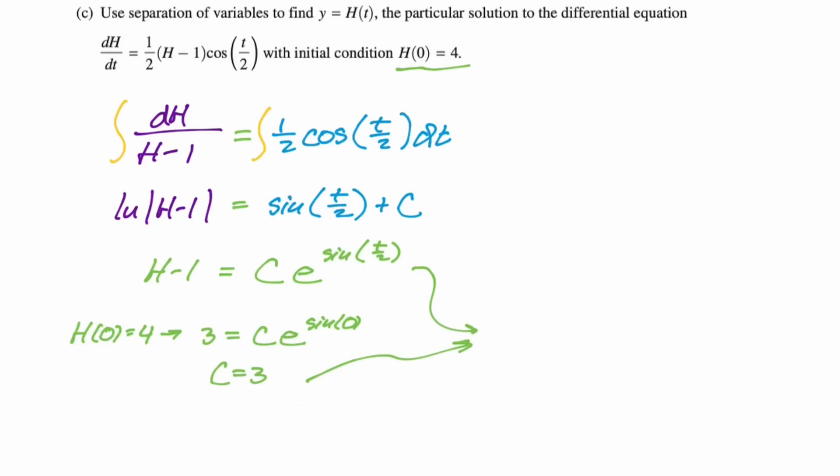And then we just want to combine everything so that we have our final answer. So h of t is going to be one plus three e to the sine of t over two. And that's the entire problem. Pretty good straightforward problem. I hope this was helpful and good luck.